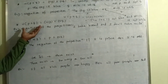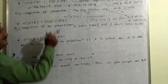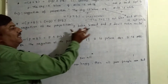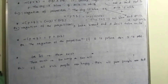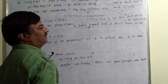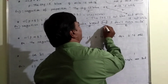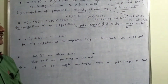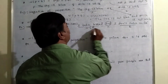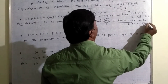Let us see one more example related to the negation of P and Q. Find the negation of the proposition: 'I take bread and I don't take milk.' Here, 'I take bread' is statement P, and 'I don't take milk' is statement Q. Both are connected with the connective 'and', which is conjunction. We are required to find the negation of these two, which gives us negation of P or negation of Q.